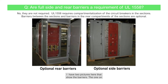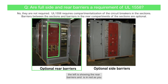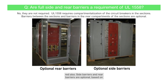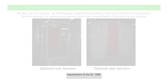I have two pictures here that show the barriers. The one on the left is showing the rear barriers and is in red as you can see. The picture on the right shows the side barriers in red also. Side barriers and rear barriers are optional, based on the requirements of each project, but it is not really a requirement of the UL1558.